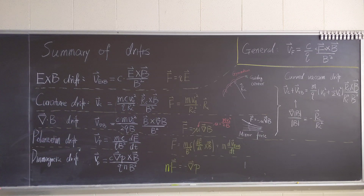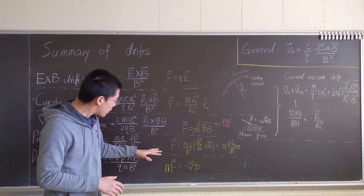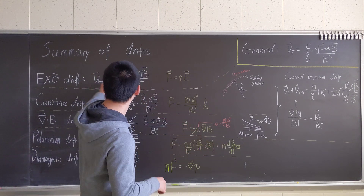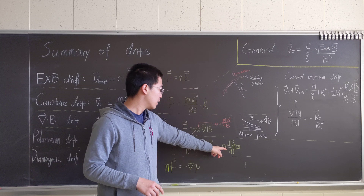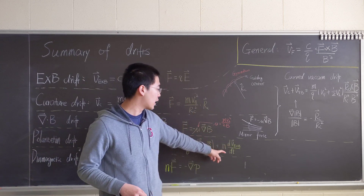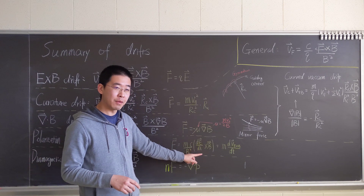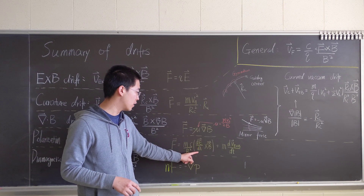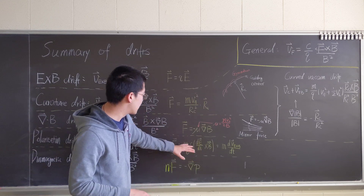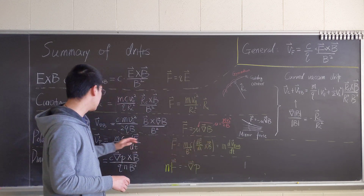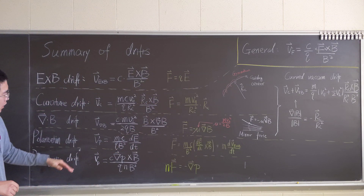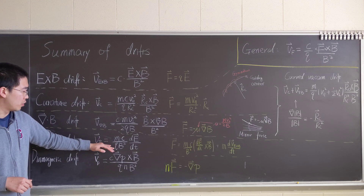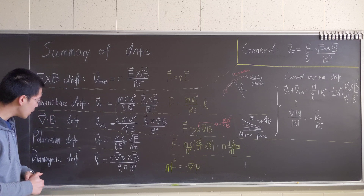And then we get the polarization drift. The polarization drift can be thought of as basically the E cross B drift — like a second law of electronic mechanics. It's just the E field changing over time, and we assume B is time independent, so only E changes with time. Plugging it in, we have v_p equals mc over qB squared times dE over dt. That's the polarization drift.